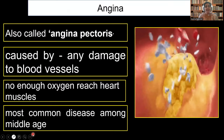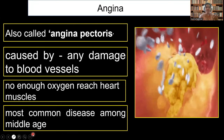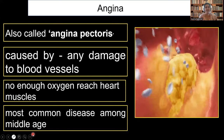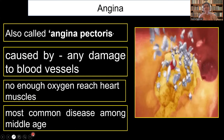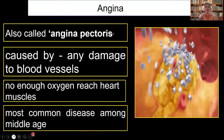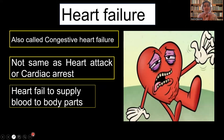The next disorder is angina pectoris. When the blood vessels are damaged, the heart muscles will not get enough oxygen, which can lead to the death of the person. It is a major disorder that occurs in middle-aged persons. Then the important one is heart failure, also known as a heart attack or cardiac arrest, where the heart fails to supply blood to the body parts and the person immediately loses their life.